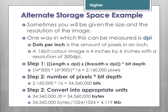An alternate storage example: sometimes you're given the physical size and resolution. For example, a 16-bit colour image is 4 inches by 6 inches with a resolution of 300 DPI. It's the same calculation as Int 2 — length × DPI × breadth × DPI — but multiplied by the bit depth. So: 4 × 300 × 6 × 300 = 2,160,000 pixels, multiplied by 16 bits = 34,560,000 bits. Converting to appropriate units gives approximately 4.119 megabytes.